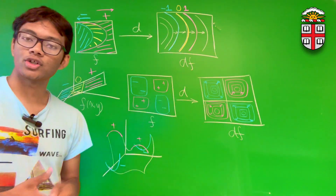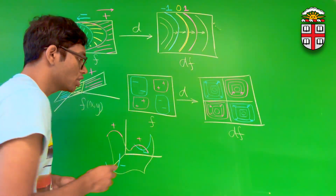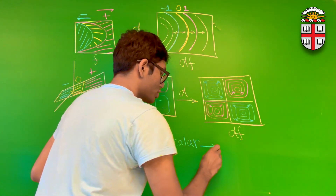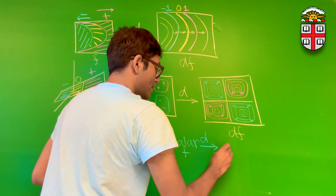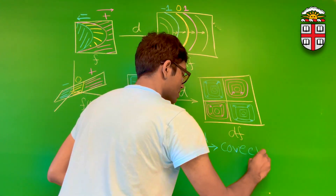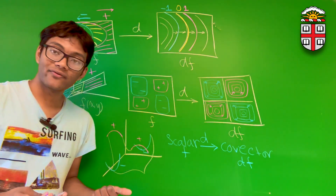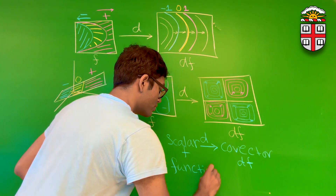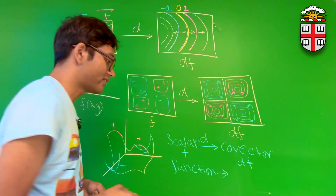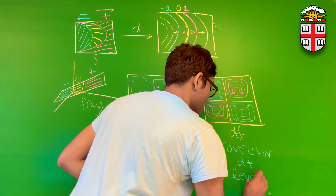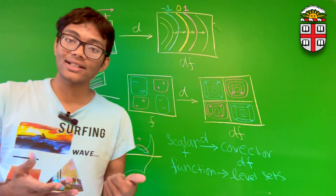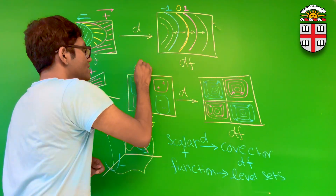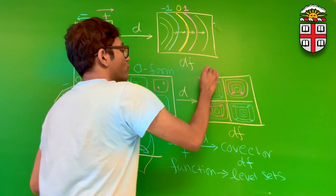To summarize, what we've just shown is that this operator df takes a scalar function f and converts it into a co-vector field df. Another way to phrase this: it takes a function f and converts it into the level sets — the contour lines — of that function. Finally, the differential operator d converts a zero-form field into a one-form.